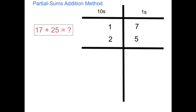As you can see our set up here, we have the tens on one side and the ones on the other. We put all the numbers in the tens place under the tens, and the numbers in the ones place under the ones. So here we have set up 17 plus 25.